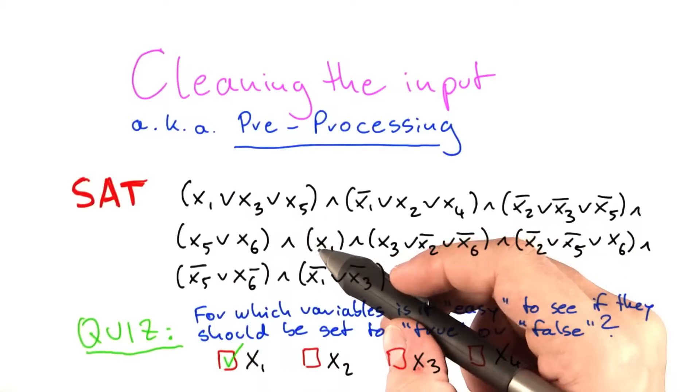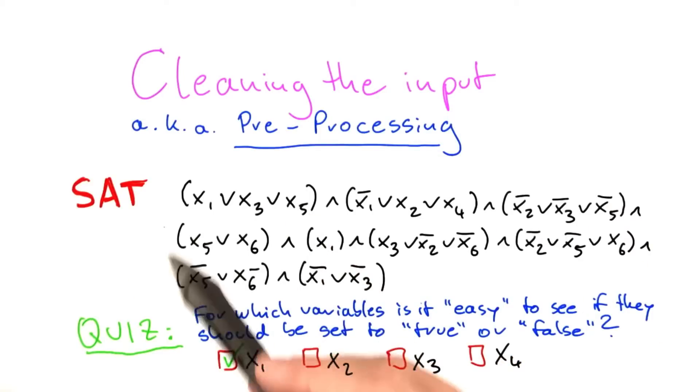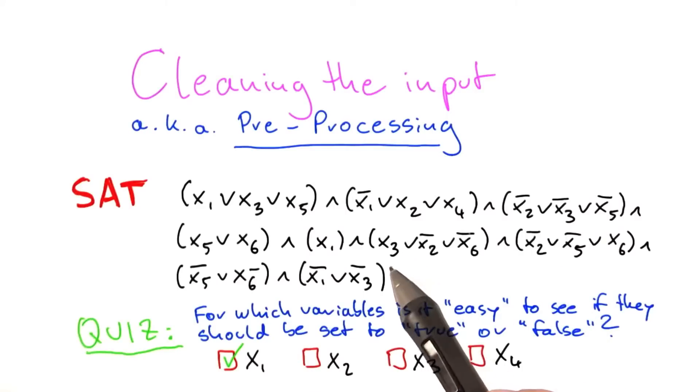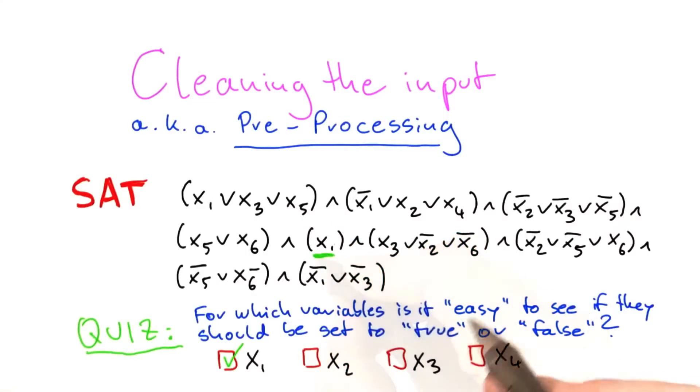Now here, x1 is in a very lonely position, so to say, because x1 makes up a whole clause. So if we set x1 to false, then this formula here, the whole formula, will also become false. So it's clear that x1 has to be set to true. And it's also easy to see that because the variable just appears once.